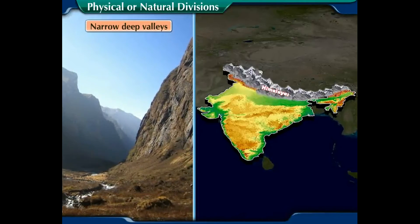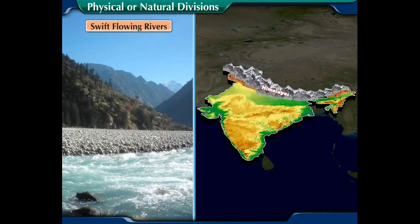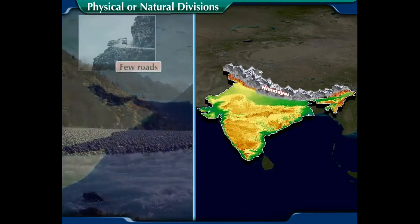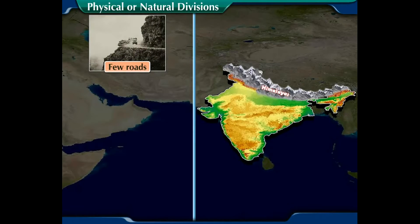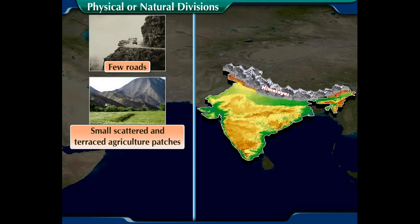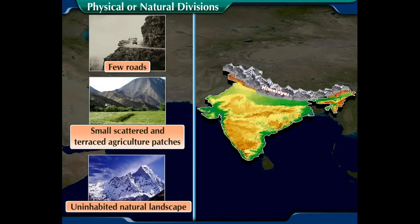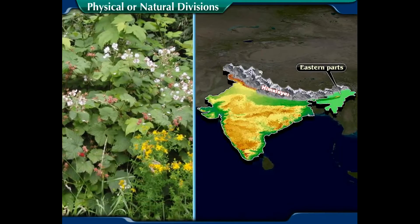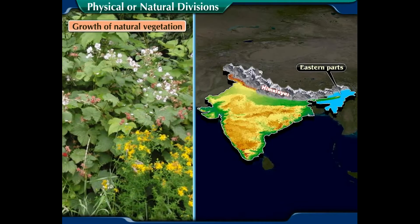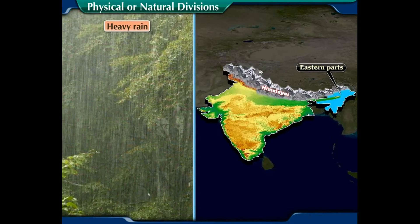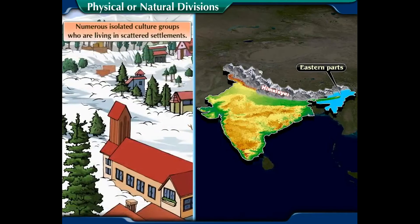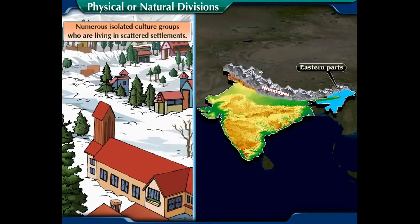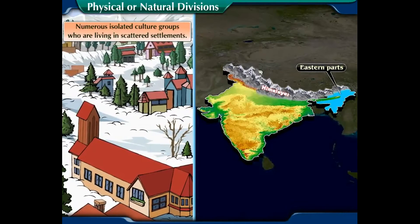Further characteristics of the Himalayas include: D) narrow deep valleys, E) swift-flowing rivers, and F) a few roads, small scattered and terraced agriculture patches, and uninhabited natural landscapes. G) The eastern parts of the region have thick growth of natural vegetation, heavy rain, and numerous isolated culture groups living in scattered settlements.